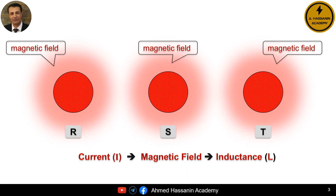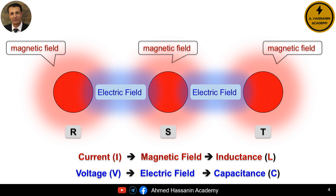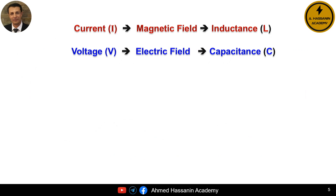We talked earlier and said that the passage of alternating current through any conductor results in the creation of an alternating magnetic field, and this alternating magnetic field causes the appearance of inductance, L. As for the voltage, the presence of a voltage difference between any two conductors creates an electric field between them, and the electric field causes the appearance of capacitance, C. Therefore, inductance L is related to the magnetic field created by the electric current, whereas capacitance C is related to the electric field created by the voltage difference.